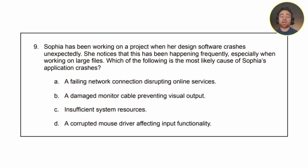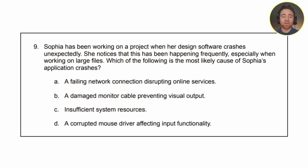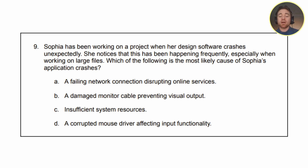The last question from exam objective five reads: Sophia has been working on a project when her design software crashes unexpectedly. She notices this has been happening frequently, especially when working on large files. Which of the following is the most likely cause of Sophia's application crashes? A, a failing network connection disrupting online services. B, a damaged monitor cable preventing visual output. C, insufficient system resources. Or D, a corrupted mouse driver affecting input functionality.